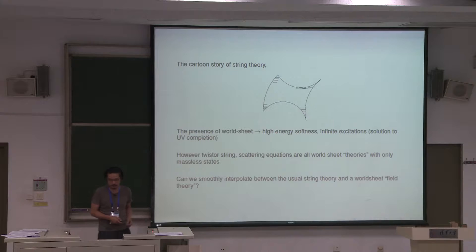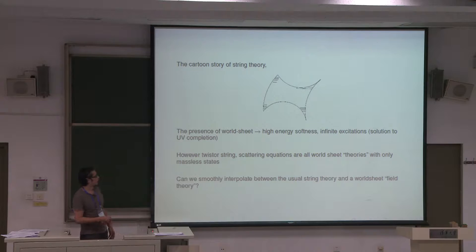The question we want to ask today is: we already have a world sheet here to describe string theory with all these conventional infinite excitations, but is there an interpolation between this kind of world sheet that tells you it's a string, and another world sheet that tells you it's a particle? Is there a smooth interpolation between these two limits?